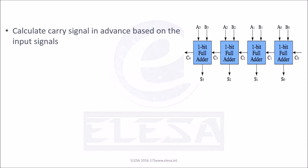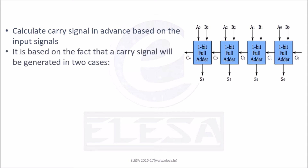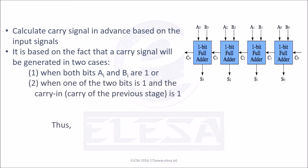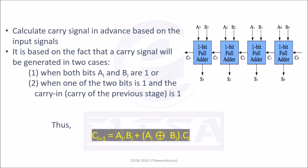Ask yourself: when will a carry signal be generated? There are two cases. The first case is when both inputs, i.e. Ai and Bi, are 1. Another case is when one of the two bits, i.e. Ai or Bi, is 1, and the carry generated in the previous stage, i.e. Ci, is 1. Thus, one can write the equation for carry generated in the i-th stage as: Ci+1 = Ai·Bi + (Ai XOR Bi)·Ci.